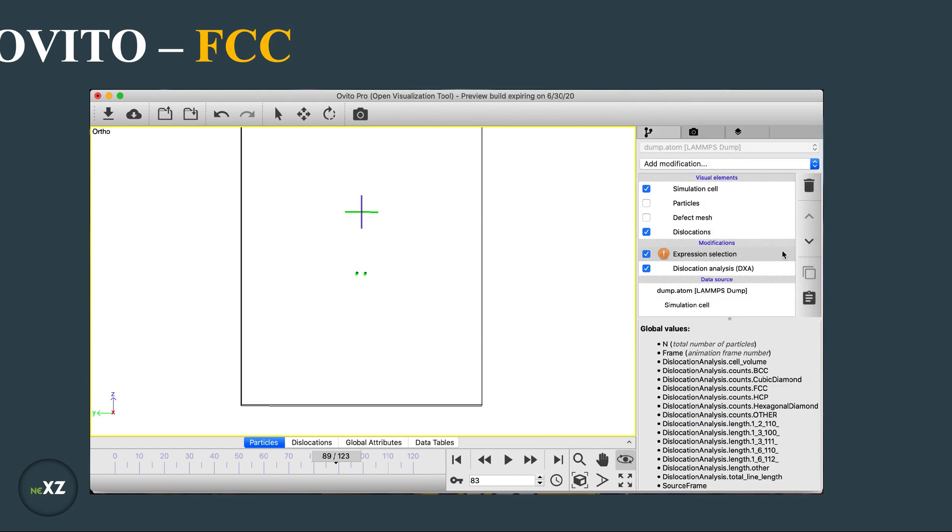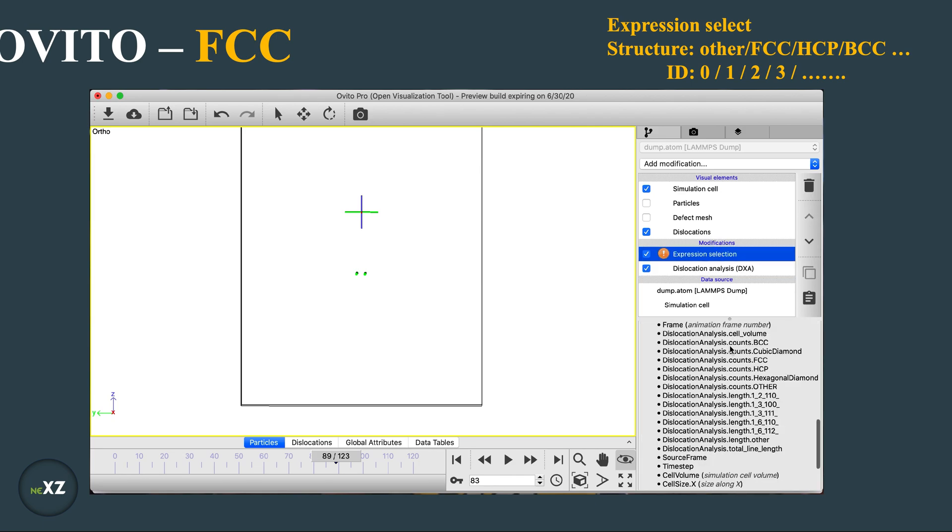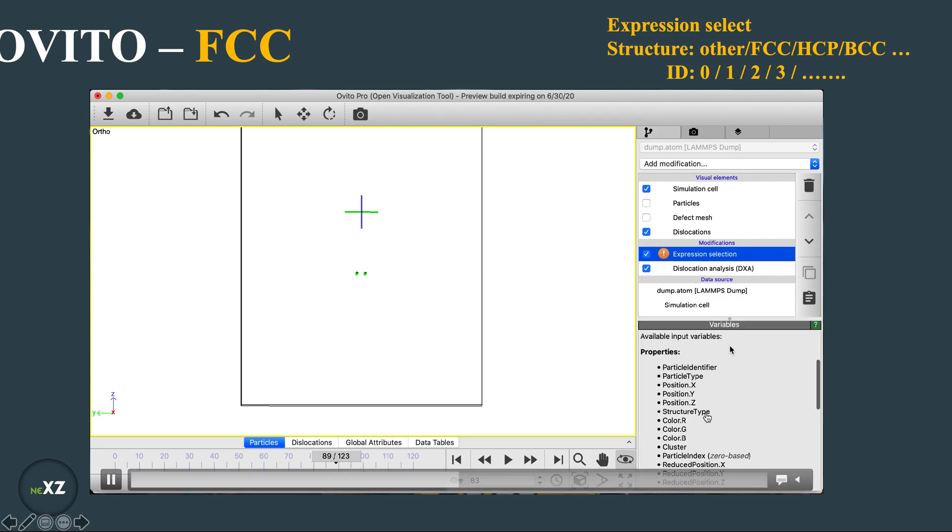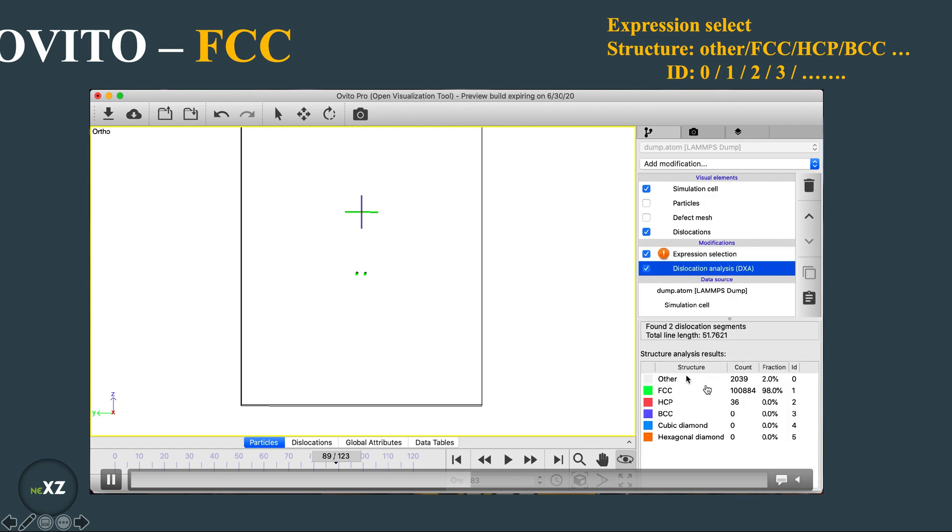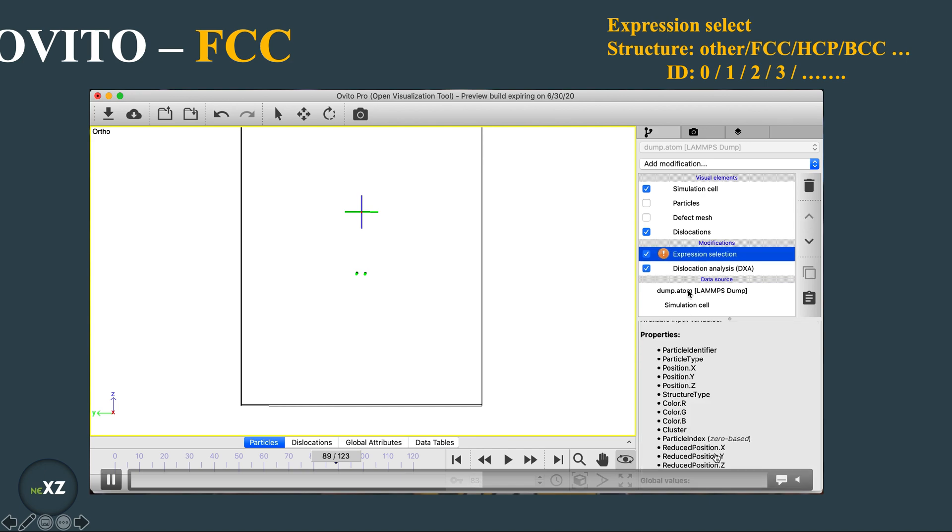And do expression selection so in the expression selection I do this. So you can see here there are many properties, I do the structure property type. So if you see in the DXA I go here the structure which are FCC, HCP, BCC, Cubic, Hexagonal, Diamond.